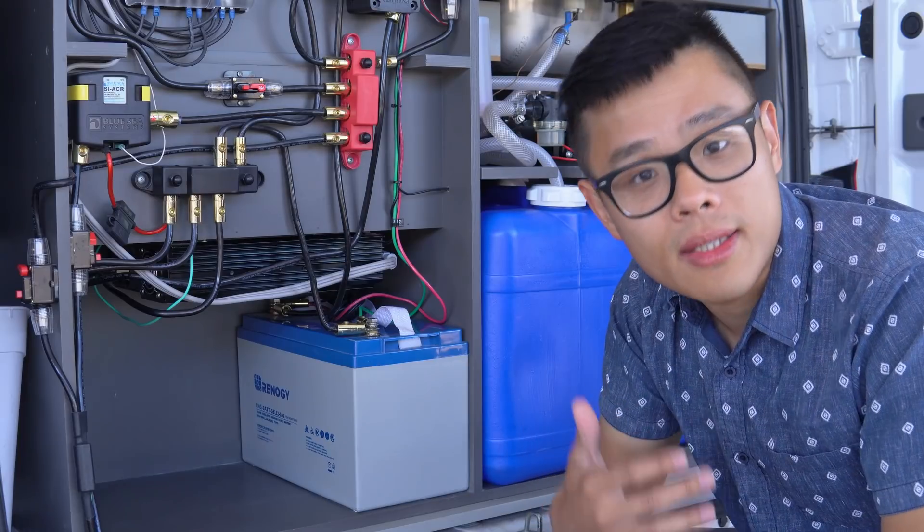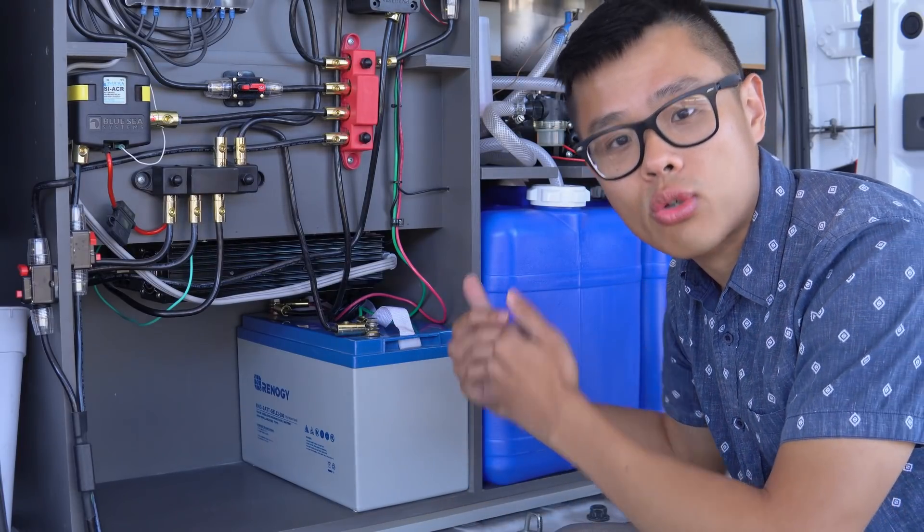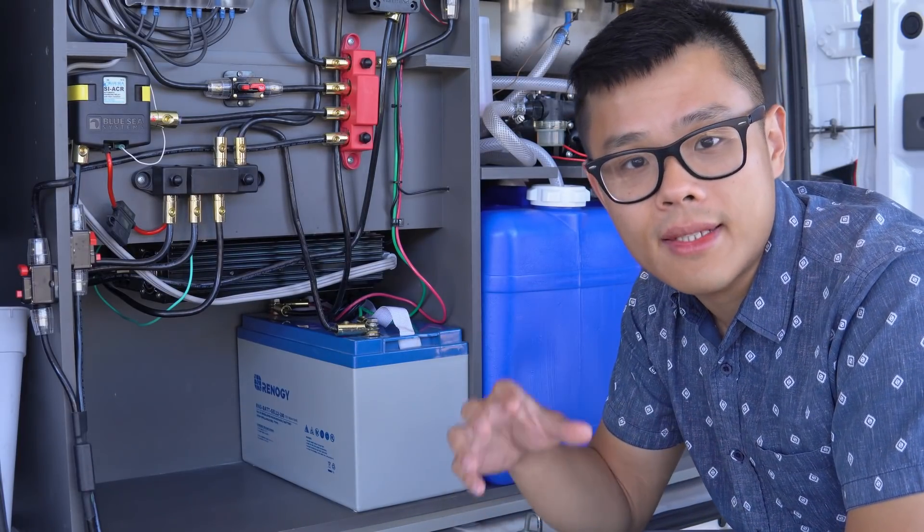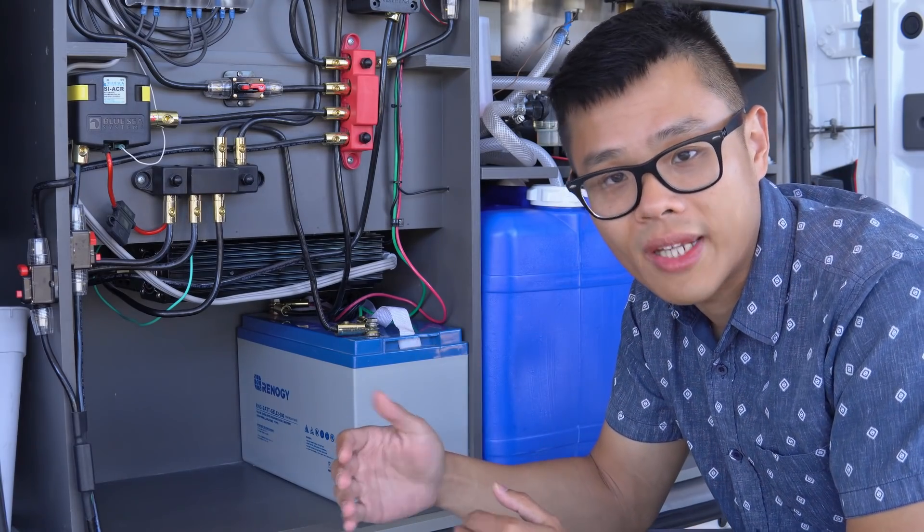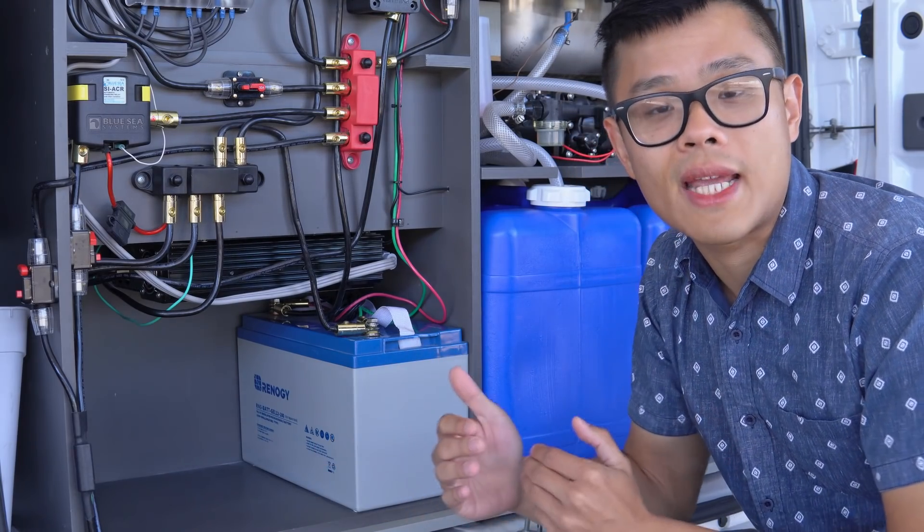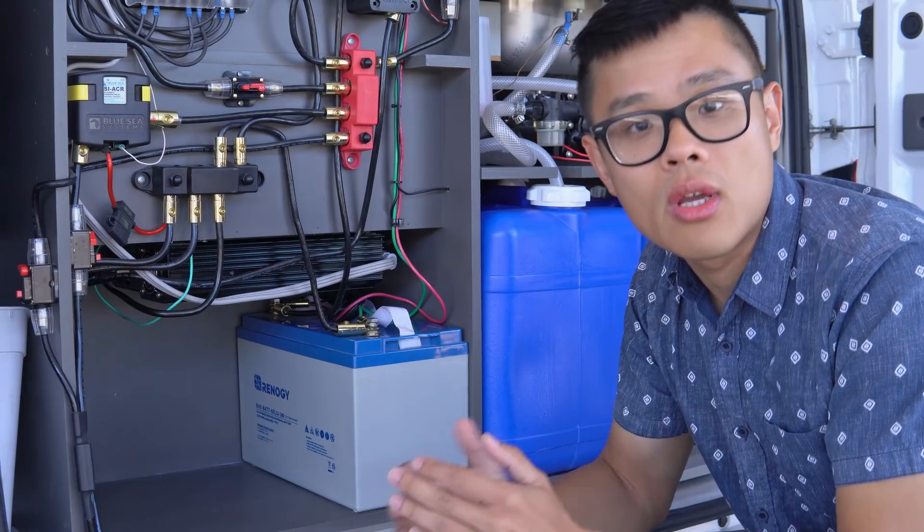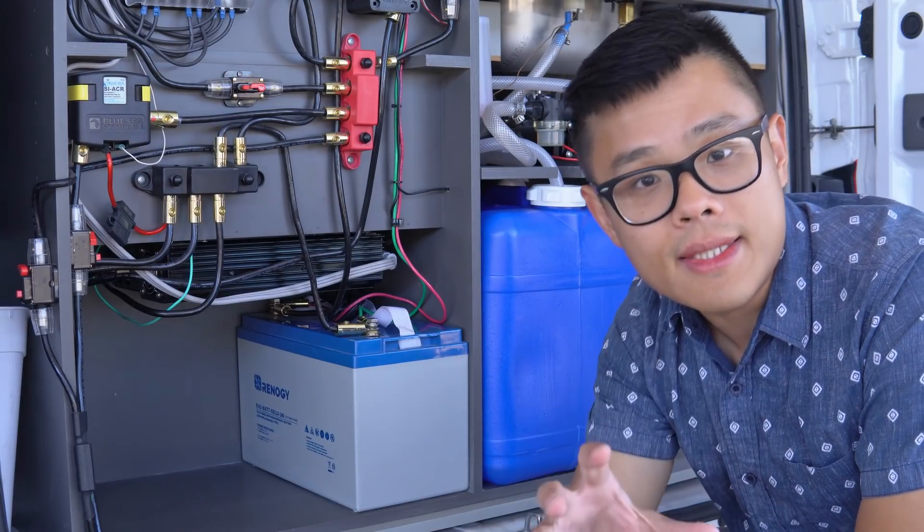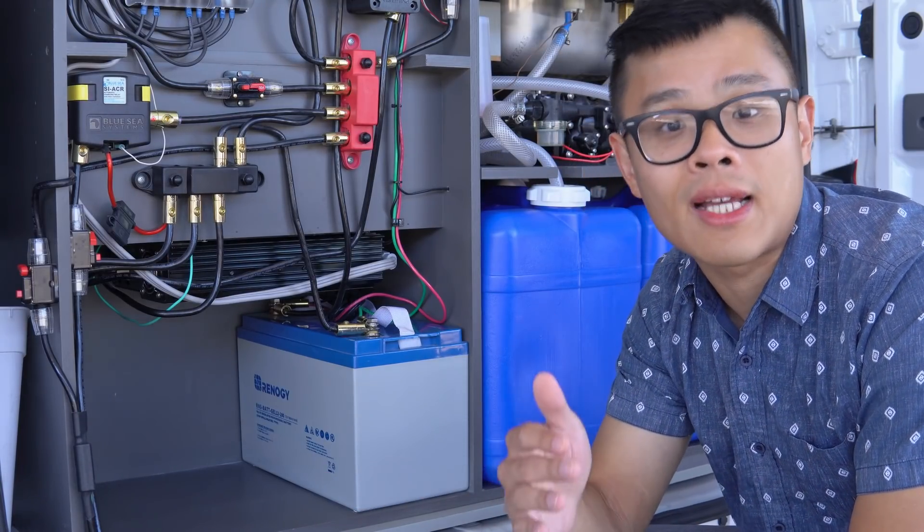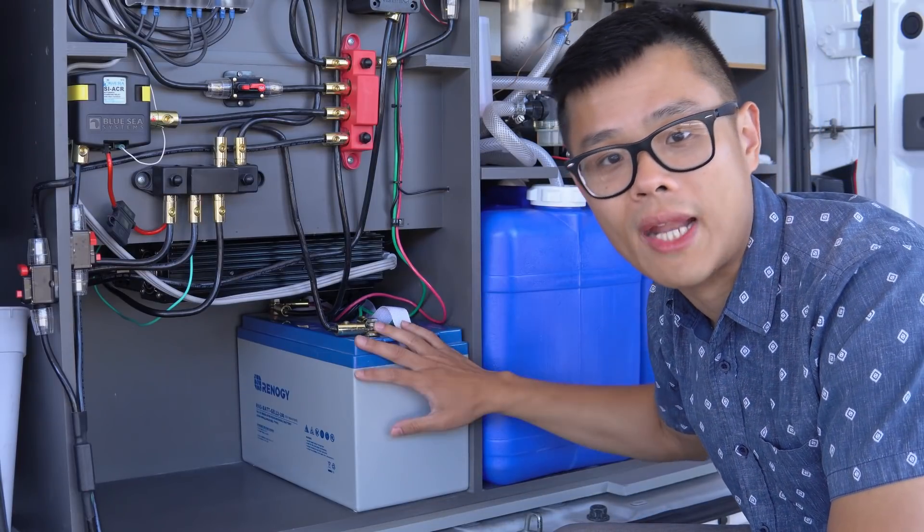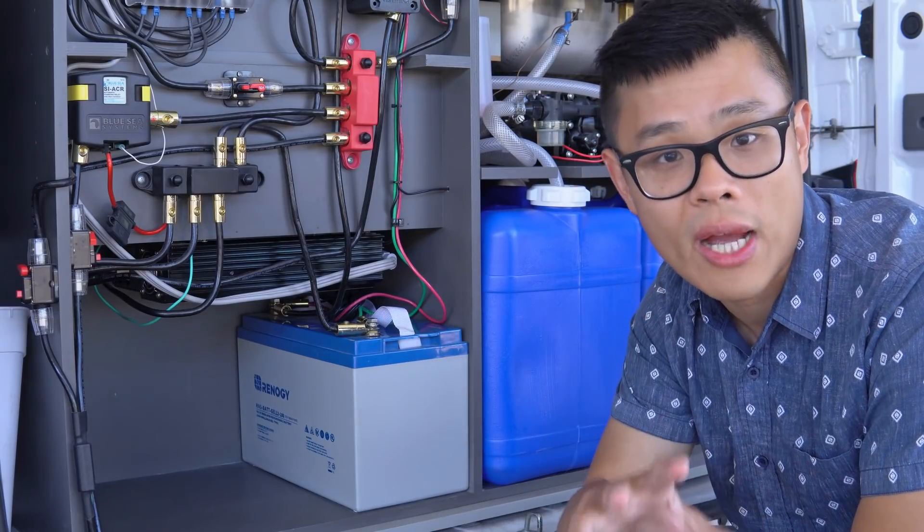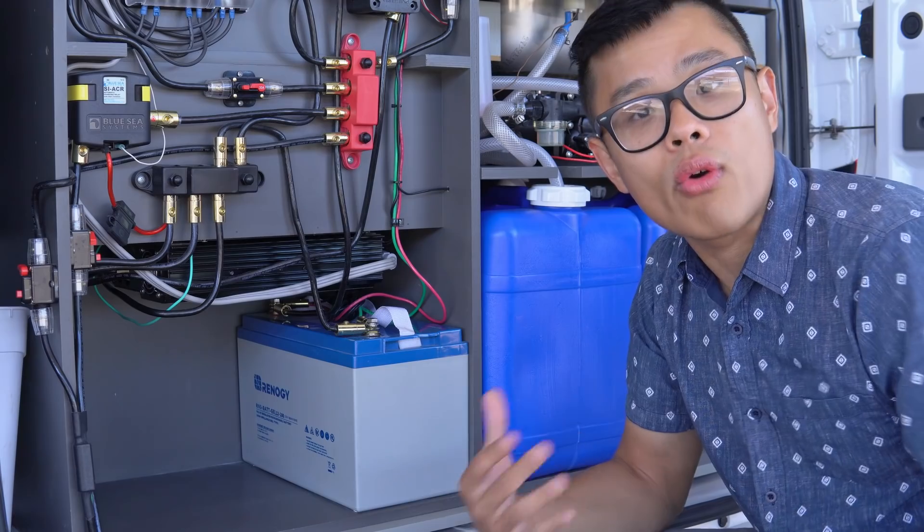This is why I recommend a DC to DC charger over a charging relay. A DC to DC charger uses the same principle as a solar charge controller. It takes DC power from one source and outputs an optimal charging voltage for your house battery. A DC to DC charger is specifically designed to connect a starter battery to any type of house battery and it will charge your house battery fully.